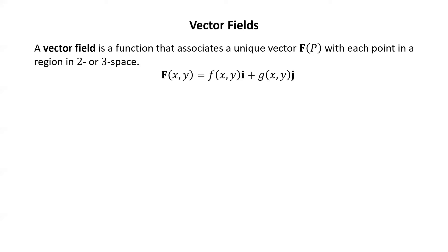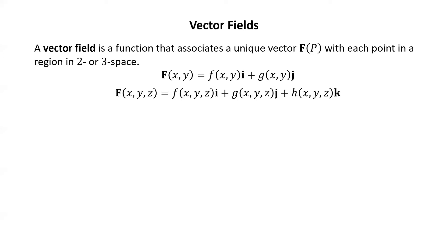For example, if we're in two space, then we have F of a point XY equal to a vector with two components: little f of XY times i plus little g of XY times j. In three space, the inputs are points of the form XYZ and the outputs are a vector with three components: little f of XYZ times i plus little g of XYZ times j plus little h of XYZ times k.